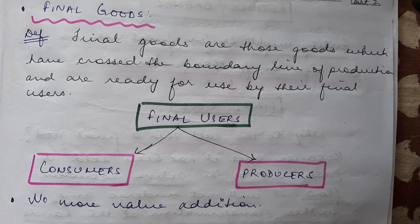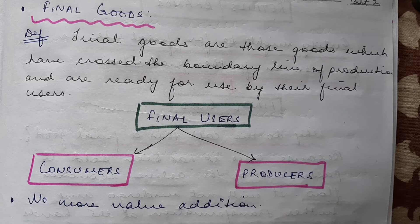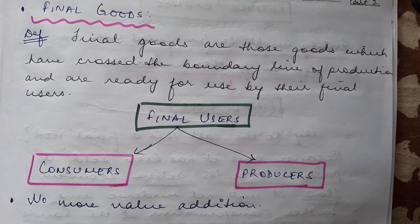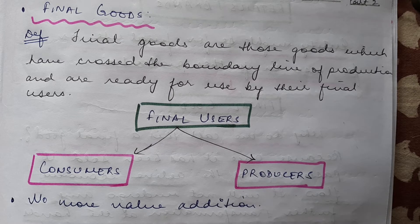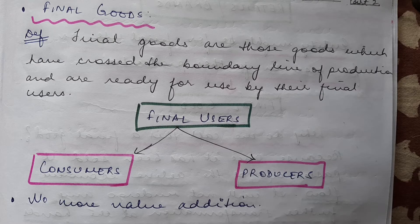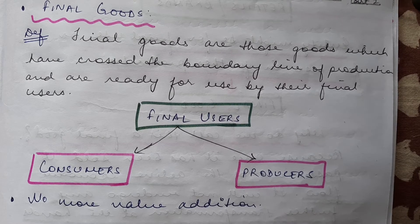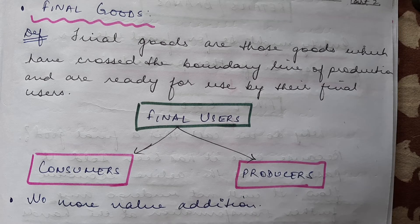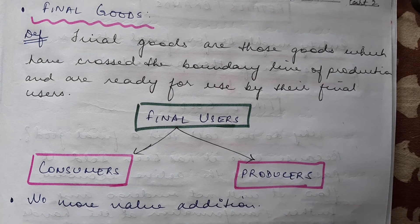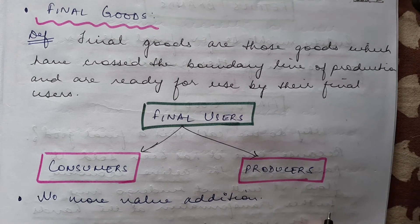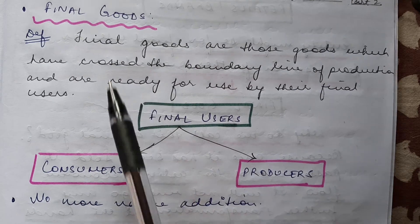Welcome students. We will be continuing with our chapter of macroeconomics, that is national income accounting. In the previous class we have been discussing about the different kinds of goods — the intermediate goods and the final goods — and we have discussed in detail about the intermediate goods, how these goods remain within the boundary line of production, values are added at each stage, and the intermediate goods are not used by the final users. Now moving on, today we will be starting with final goods.